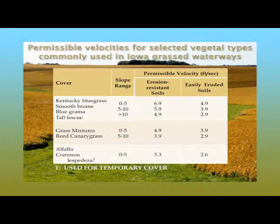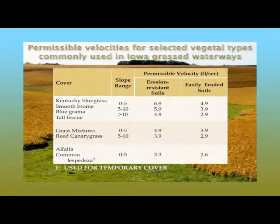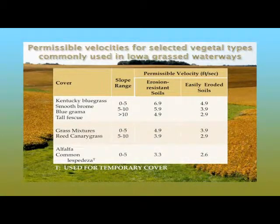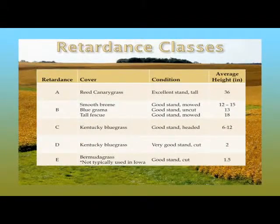Permissible velocities for selected vegetative types commonly used in Iowa grassed waterways are shown for erosion-resistant and easily erodible soils. For example, Kentucky bluegrass, smooth brome, blue gamma, and tall fescue under different slope ranges may have permissible velocities ranging from 2.9 feet per second on easily eroded soils at greater than 10% slope, up to 6.9 feet per second on a 0–5% slope on erosion-resistant soils. Grass mixtures, reed canary grass, and alfalfa also influence permissible velocity for different soil conditions.